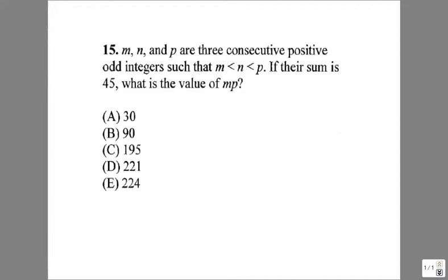Nevada Virtual Academy, welcome back. Problem number 15: M, N, and P are three consecutive positive odd integers such that M is less than N, which is less than P. If their sum is 45, what is the value of MP?